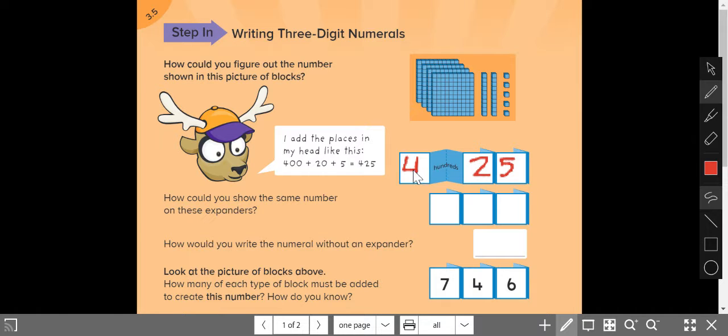This expander shows the 400 separated from the 25. This is the same expander with all of the pieces closed. So, 425.